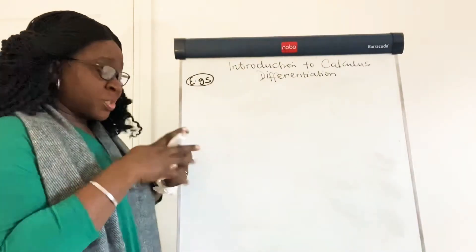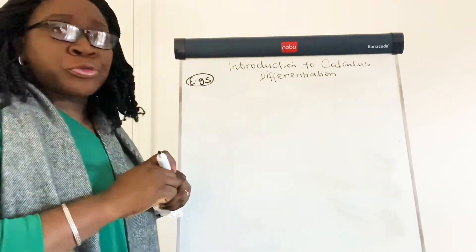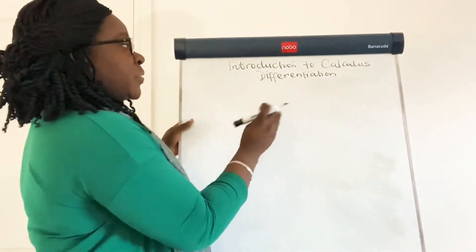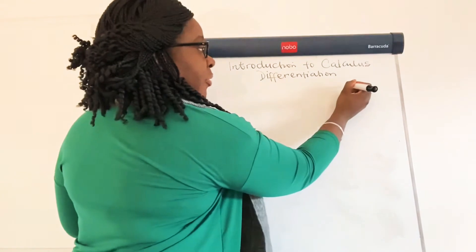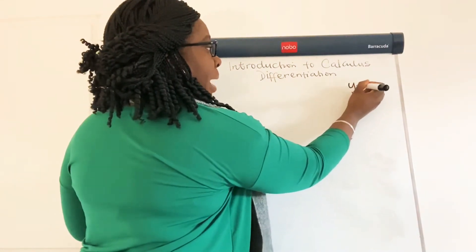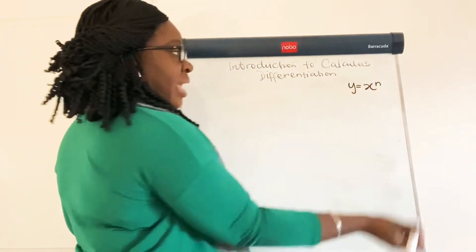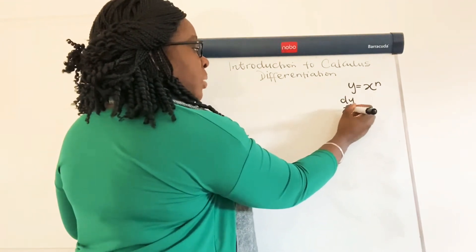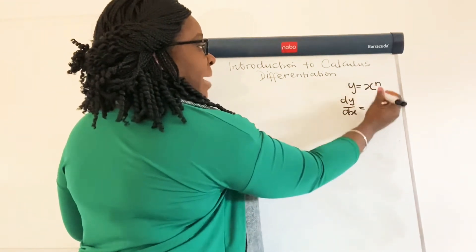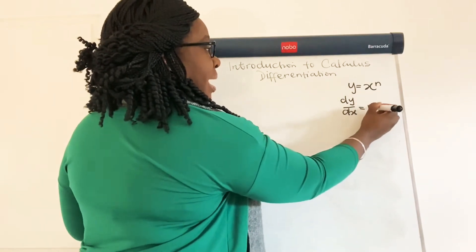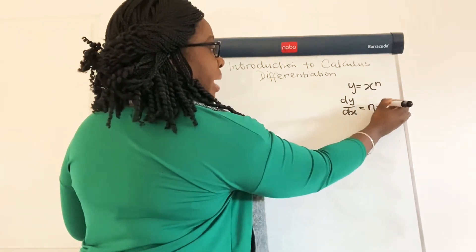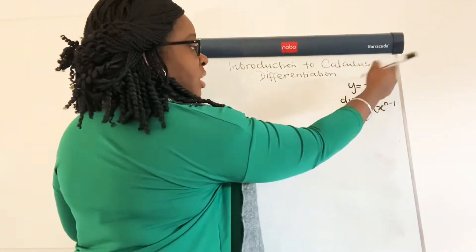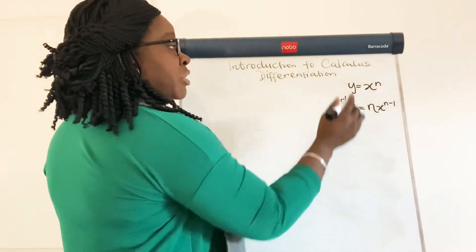To be able to differentiate, we need to use a few rules and I'm going to put the rules by the side here so that we can keep them in front of us and use them to work as we go along. The first one is if we have a curve like y is equal to x to the power of n, then to differentiate that, dy by dx would be equal to: you multiply by the coefficient of x, which is 1 in this case, giving n x to the power n minus 1. So multiply by the power and reduce the power by 1.